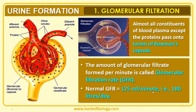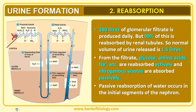Just imagine if 180 liters per day — all of it filtered — were excreted, you cannot imagine the survivability of living organisms. Luckily, whatever is filtered — 180 liters per day — gets reabsorbed. That step is referred to as reabsorption. So 180 liters of glomerular filtrate is produced daily, but 99 percent of this is reabsorbed by the renal tubules, resulting in approximately 1.5 liters of urine.